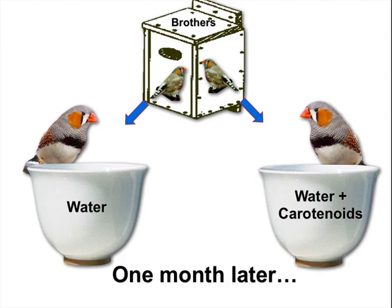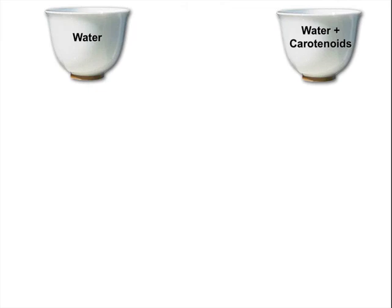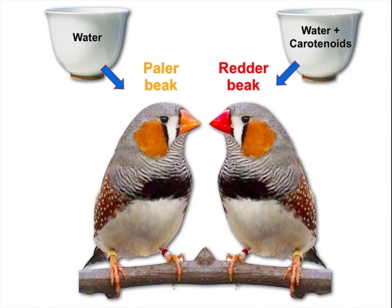Then they waited about a month to see what happened, and they got a predictable result. The males with the added carotenoids had indeed developed redder beaks than those without the carotenoids. That was pretty much expected.